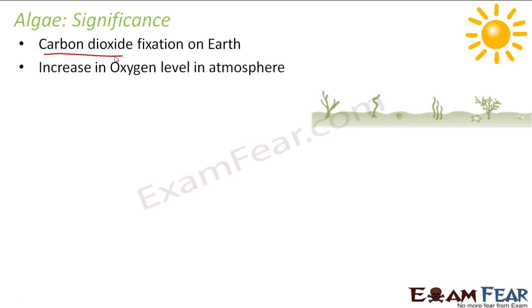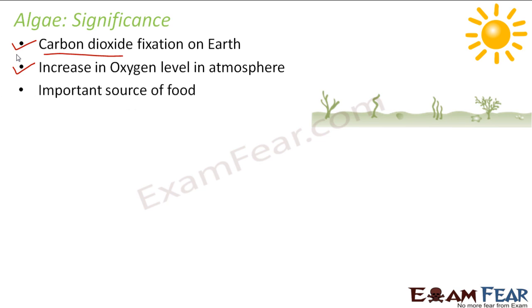The second significance is the increase in oxygen level in the atmosphere. As a product of photosynthesis, oxygen is produced. So more and more oxygen is produced as a result of photosynthesis, which increases the level of oxygen in the atmosphere.